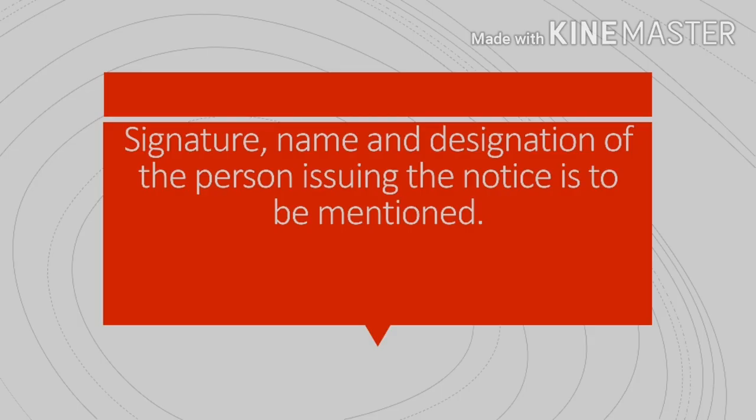Notice ki basic information provide karne ke baad, jisne woh notice likha hai woh apne signature karta hai, aur uske baad uska naam likha jaata hai, aur phir us person ka naam likha hai uska designation mention kiya jaata hai. Suppose keejiye Kanika naam ki ladki ne notice likha jo ki head girl hai school ki. Toh Kanika ke signature honge, thereafter her name Kanika, and then hum uska designation likhenge jo ki bracket mein jaayega — yani ki head girl.